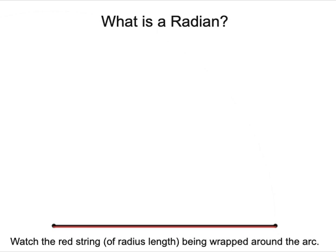What is a radian? A radian is a measure of an angle, just like degrees. But how much is one radian? Let's find out.